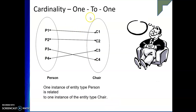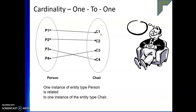In more detail, consider one-to-one using person and chair. Suppose we have four persons and four chairs — one person is associated with only one chair. One instance of entity type Person is related to one instance of entity type Chair. So P1 is an instance of Person and C1 is an instance of Chair; P1 is associated with C1. P2 cannot be associated with C1 because only one person can sit in one chair. This cardinality is one-to-one.